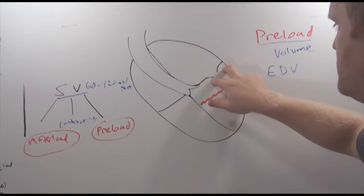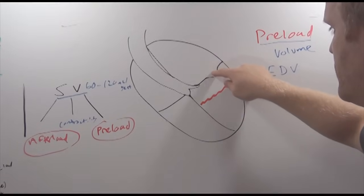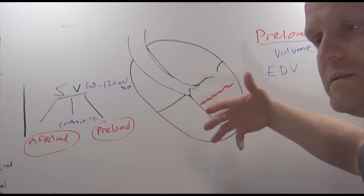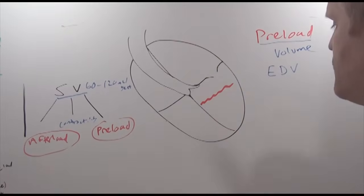So mitral valve is going to open, blood is going to go from atria to ventricles, it's going to fill the ventricle, and that is our end diastolic volume. That's the preload.